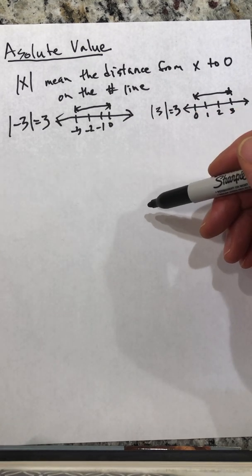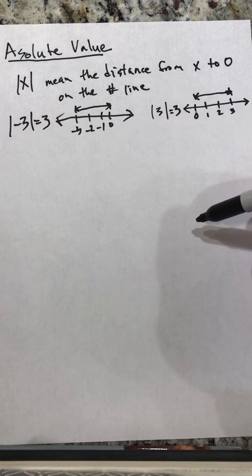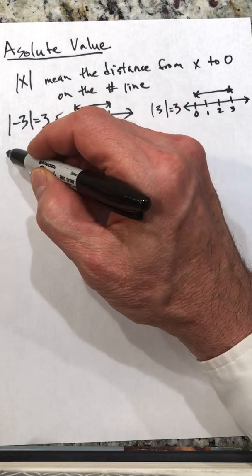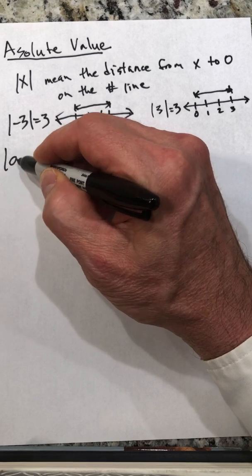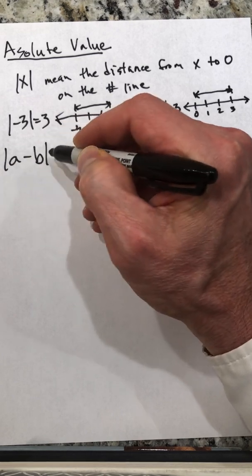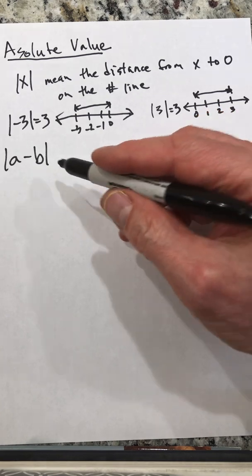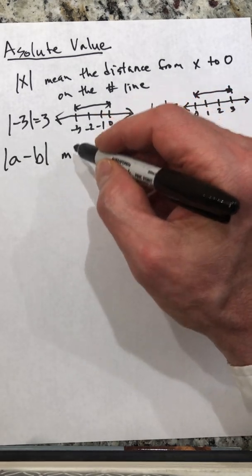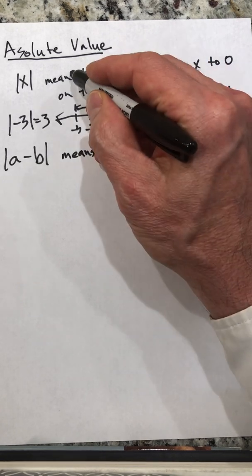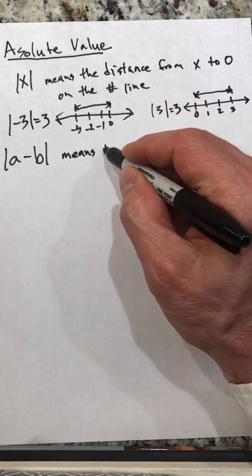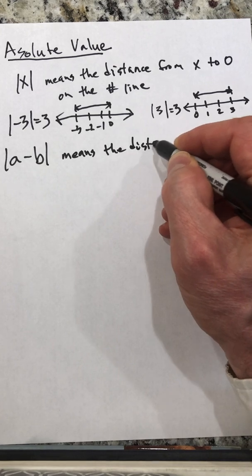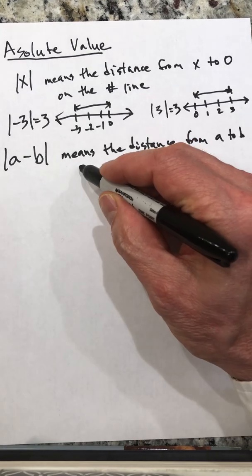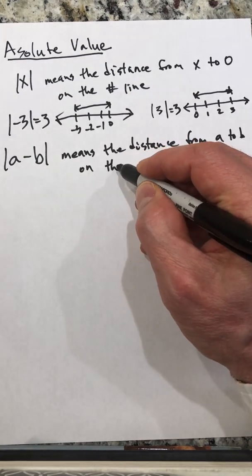Many people like to think that with absolute value, whatever comes out is always positive. There are other arrangements we see with absolute value. One of them is the absolute value of a difference. The absolute value of the difference of a and b means the distance from a to b on the number line.